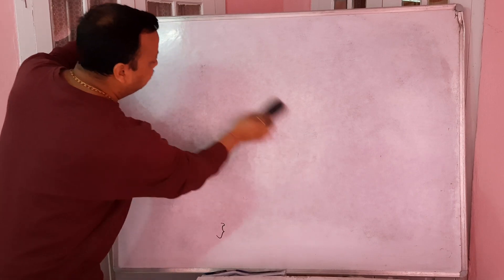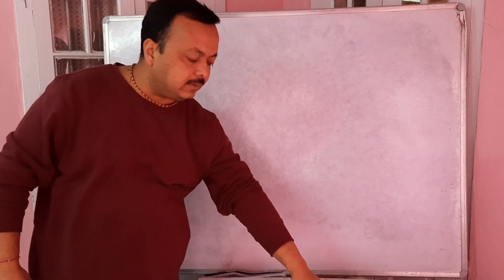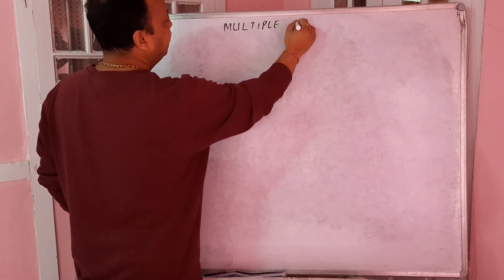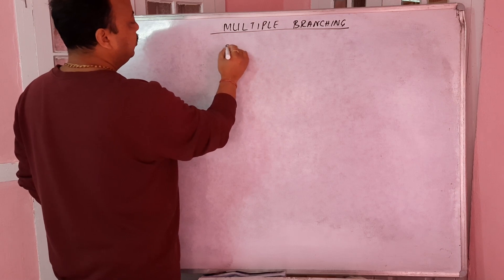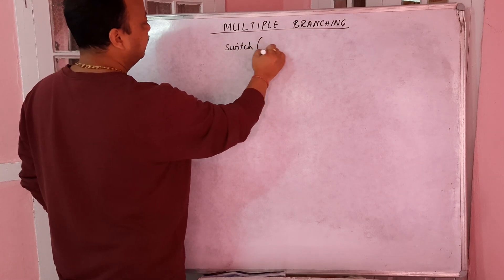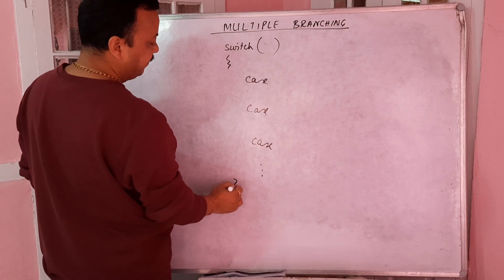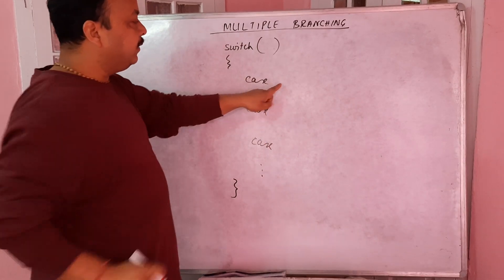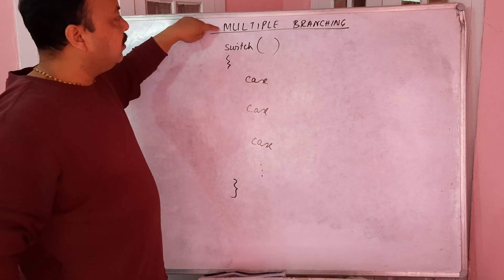We will now jump to switch case - multiple branching. In multiple branching, you take a variable or value and check whether it matches the first case. If it doesn't match, you check the second case, then the third, and so on. That is why it is called multiple branching.